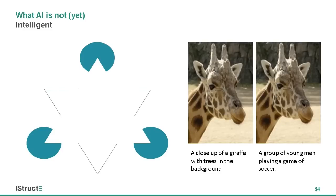Human intelligence can also see what is suggested. For example, we can see a white triangle on the left-hand side — AI generally can't. We can see two giraffes, whereas changing a few crucial pixels can fool a machine learning program into thinking the image is something completely different.